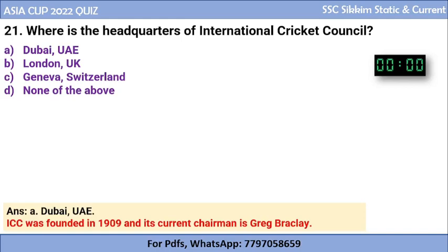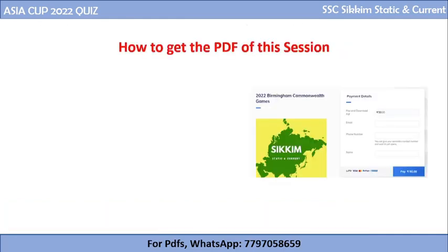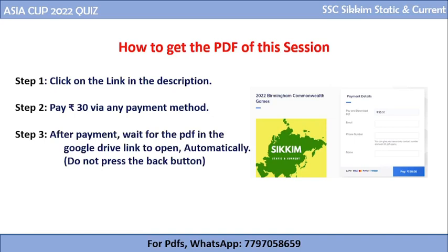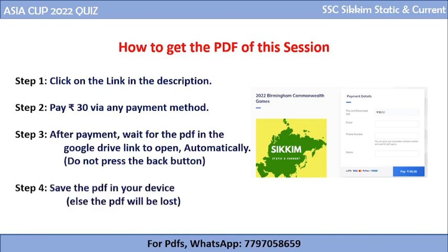With this, we complete all 21 questions. Please write your scores in the chat box or comment box. I hope this session was fruitful. To get the PDF of this session, click on the link in the description box. A payment page will open — pay Rs. 30 via any payment method. After payment, wait for the PDF in the Google Drive link to open automatically. Do not press the back button during that process. Then save the PDF in your device, else the PDF will be lost.